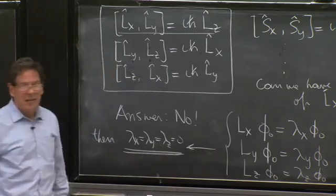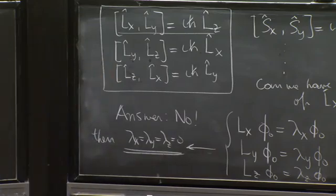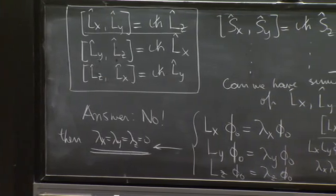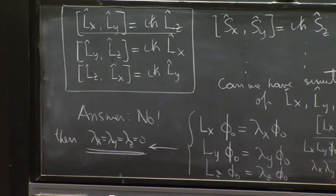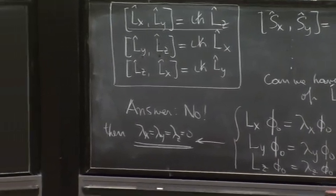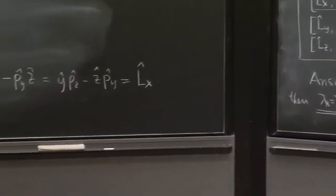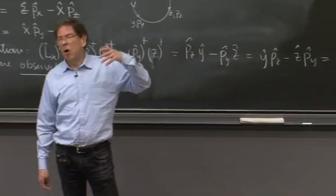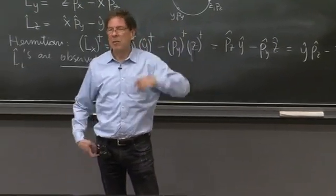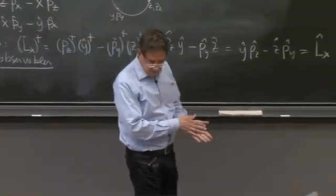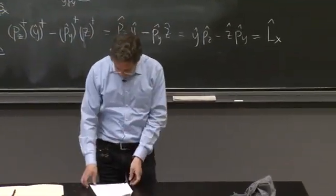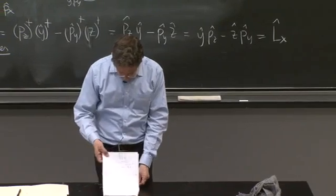Lambda x equal lambda y equal lambda z equals 0. So you can have something that is killed by all of the operators, but you cannot have a non-trivial state with non-trivial eigenvalues of these things. So we cannot have, we cannot tell what is Lx on the state and Ly on the state simultaneously. Any of those two is too much.